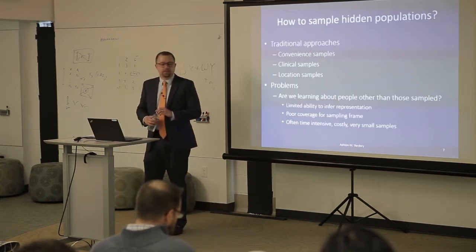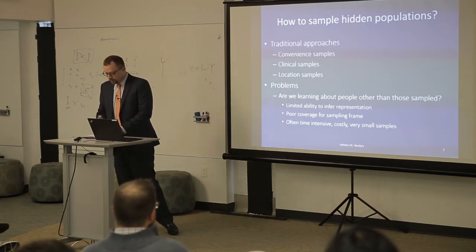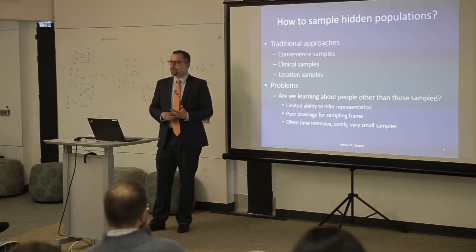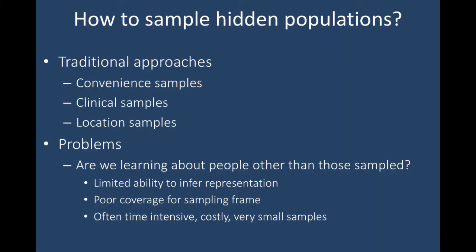There are many traditional approaches to sampling these populations. The most common one used for the longest time was just a convenience sample — you'd walk around and talk to whoever you could find, or put up flyers and whoever came to your survey center are the people you'd speak to. Other approaches include sampling a random subset of people visiting an STI or HIV clinic, or a location-based approach where for homeless populations you might pick bridges where people sleep and survey everyone there.